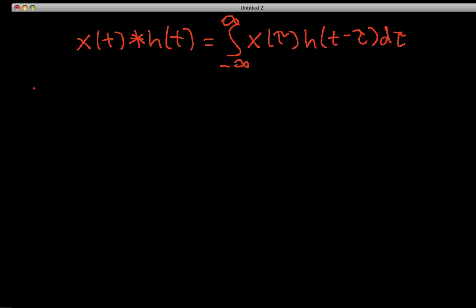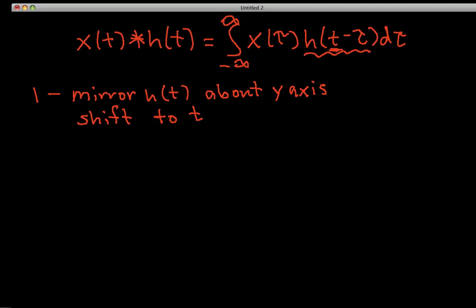So the first step in actually working this integral, this h of t minus tau has the effect of mirroring h about the y-axis and then shift it to the value of t that you have here in this integral. So that's the first step. As you take this h, you flip it about the y-axis and then you shift it right or left so that what was at 0 is now at t. That's step 1.